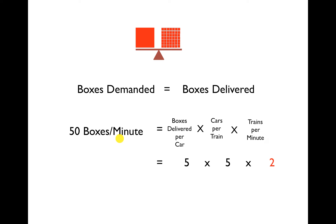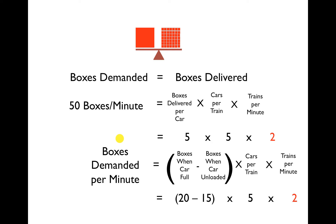In order to more fully develop the Fick equation, we need to rearrange these terms. Instead of saying boxes delivered per car, we can say: what was the difference between the number of boxes when the car was full versus when the car was unloaded? Each car when full carried 20 boxes, and when unloaded had 15 boxes — a difference of five boxes, the same term as before. We multiply by the number of cars per train, then figure out how many trains per minute we need to meet the systemic oxygen demand.